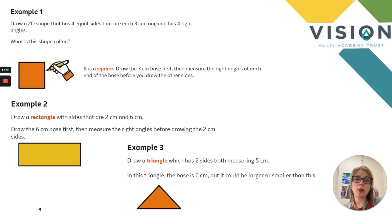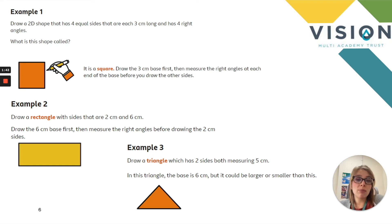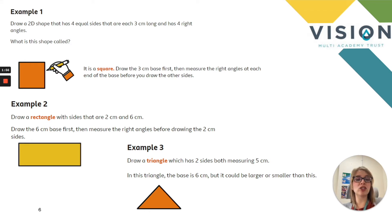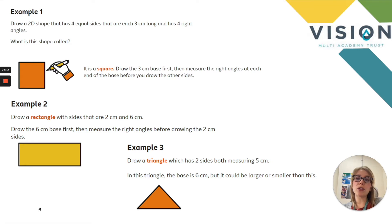Here are a couple of examples including measurement length. Example one: draw a shape that has four equal sides that are three centimetres long and has four right angles. What's the shape called? We know that it's a square — the big hint is that it's got four equal sides. Draw the three centimetre base first, then measure the right angles at each end and draw the other sides. The same process applies for a triangle: think about the number of sides, the length of the sides and the angles.